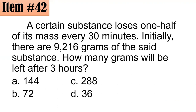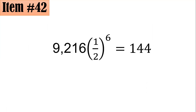How many 30-minute intervals are there in three hours? There are six. So this 9,216 grams will be multiplied by one half six times. Hence, 9,216 times (1/2) to the sixth power. Using your calculator to simplify this, you will get 144. Letter A.